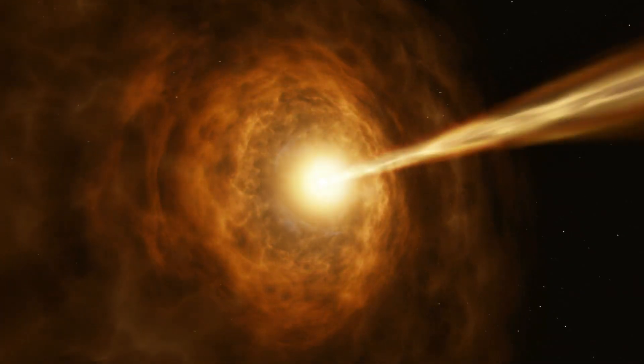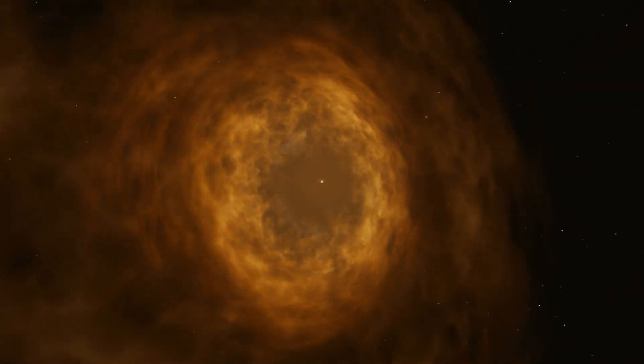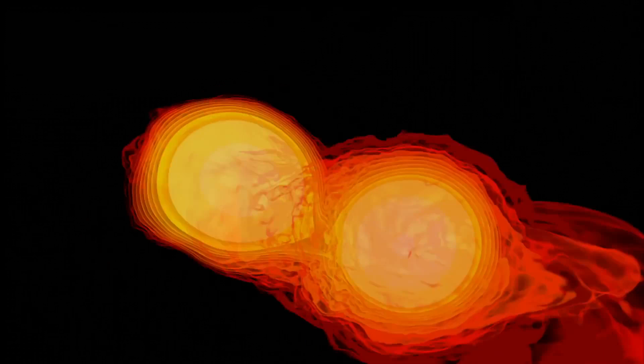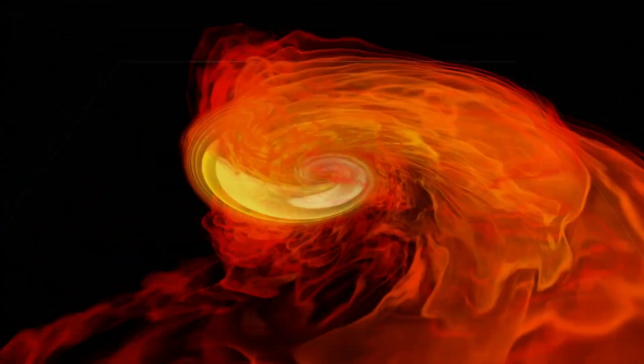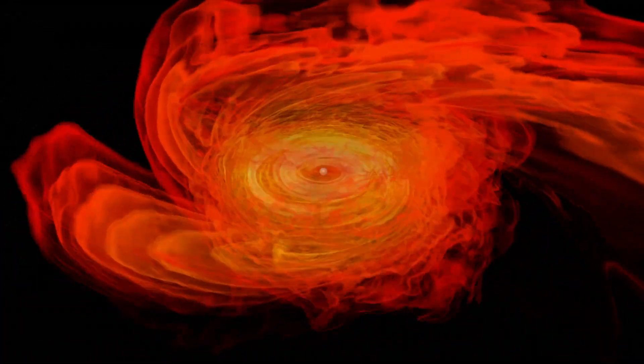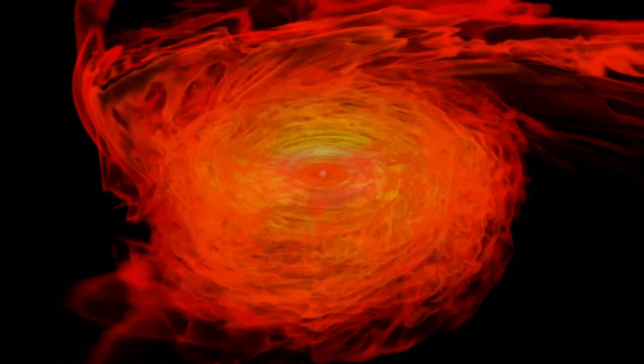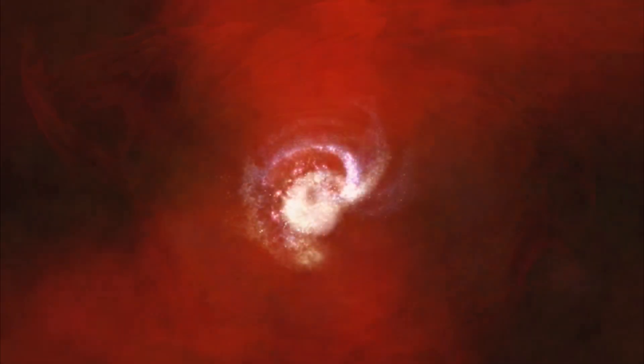Lyman-alpha blobs are amorphous bodies resembling the shape of amoebas or jellyfish, consisting of a huge concentration of hydrogen. These blobs are the initial and very short stage of the nucleation of a new galaxy. The largest of them, LAB-1, is more than 200 million light-years wide and is located in the constellation Aquarius.